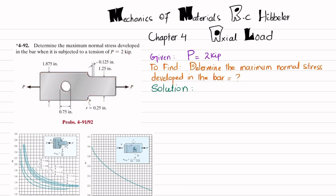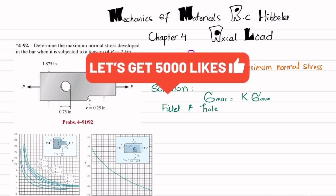We will find the maximum normal stress that will be developed in this bar. Let's start with the solution. We know that maximum stress is equal to the stress concentration factor K into sigma average. We have a fillet and a hole.